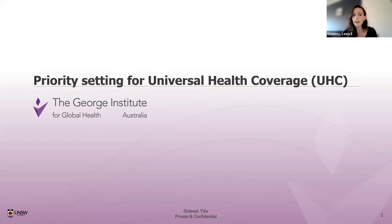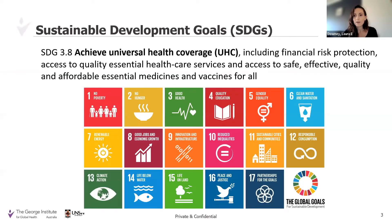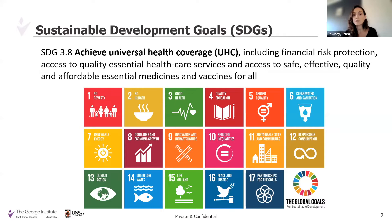Today I'm going to talk about priority setting and how that relates to universal health coverage, and then one particular framework that is often applied to the priority setting process called the accountability for reasonableness framework. I'm aware that those of you who have attended multiple sessions today will have heard a lot about pharmacoeconomic research and health technology assessment, and in this last session I'm really going to bring it back to why we need health economics at all — why we do this kind of research and how it can ultimately lead to better decisions, better policies, and better health.